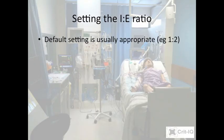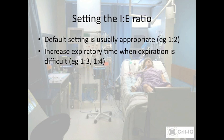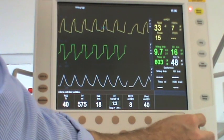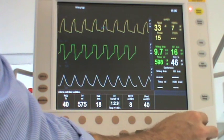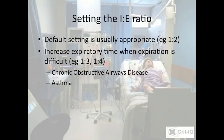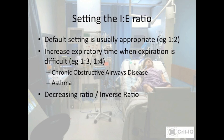Ventilators have default IE ratio settings appropriate for most patients. In some patients, pathological processes may result in difficulty fully expiring — for those with COPD or asthma, a longer proportion of time in expiration can assist this. In other patients where collapse of lung tissue results in significant physiological shunt and hypoxia, changing the ratio to 1 to 1 or even an inverse ratio may assist in recruiting collapsed alveoli. These concepts will be further developed in a later vodcast.